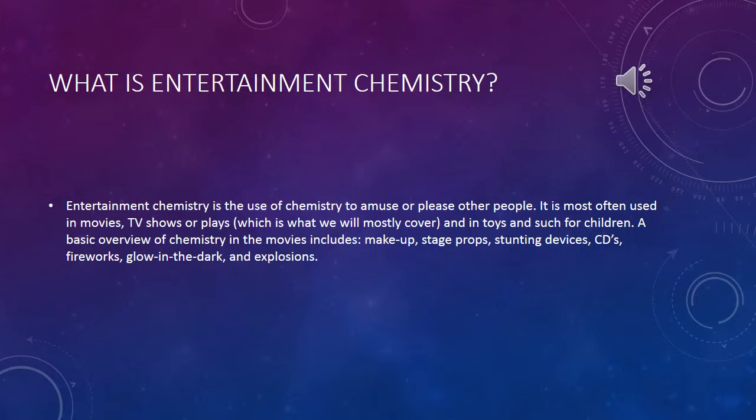A basic overview of the chemistry in movies includes makeup, stage props, stunting devices, CDs, fireworks, glow-in-the-dark, and explosions. A chemical equation that we will do in our presentation will be how to make Play-Doh, and that falls under the amusement for children.